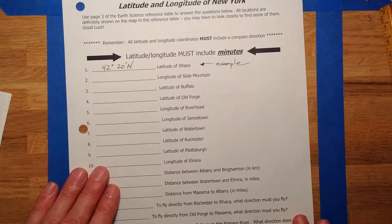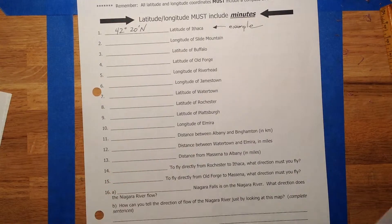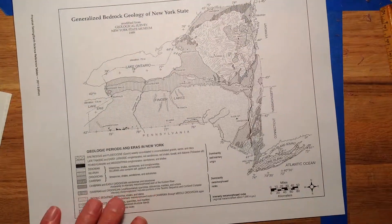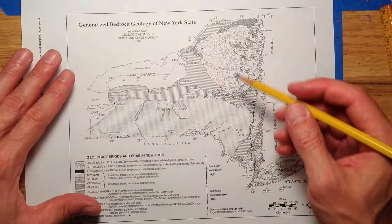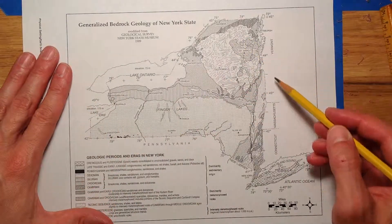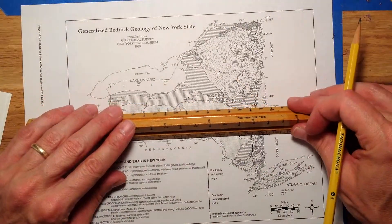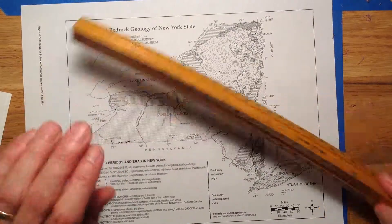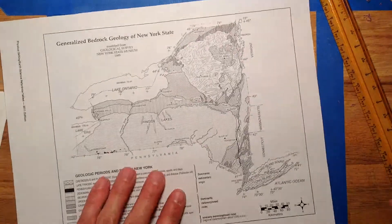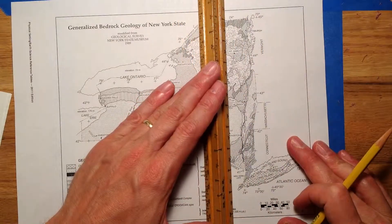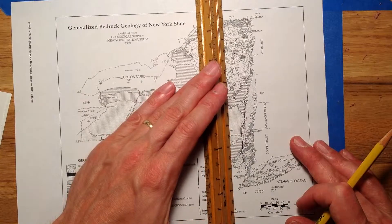Okay. Let's do one here using the earth science reference table. I have some reference table pages. And let's do longitude of slide mountain. Now, this gets a little more jumbled. There's a lot to this map. There's other things. The patterns here show rock types. We won't be using that. We're going to be using these latitude and longitude. So, you got to look around for a lot of these. Slide mountain is right here. The question is asking the longitude of slide mountain.